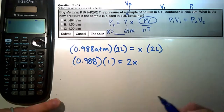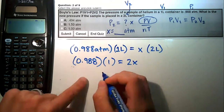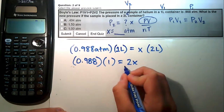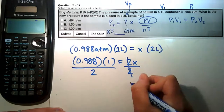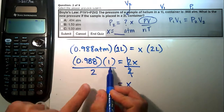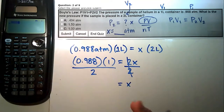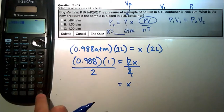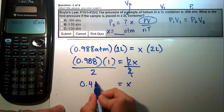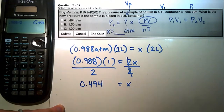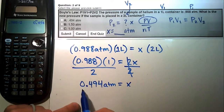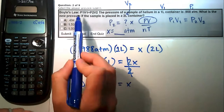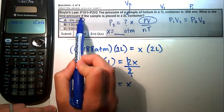To isolate X, we divide both sides by 2. X equals 0.988 times 1 divided by 2, which is just 0.988 divided by 2, giving us 0.494 ATM. Looking at the answer choices, 0.494 is exactly letter A, so letter A is our correct answer.